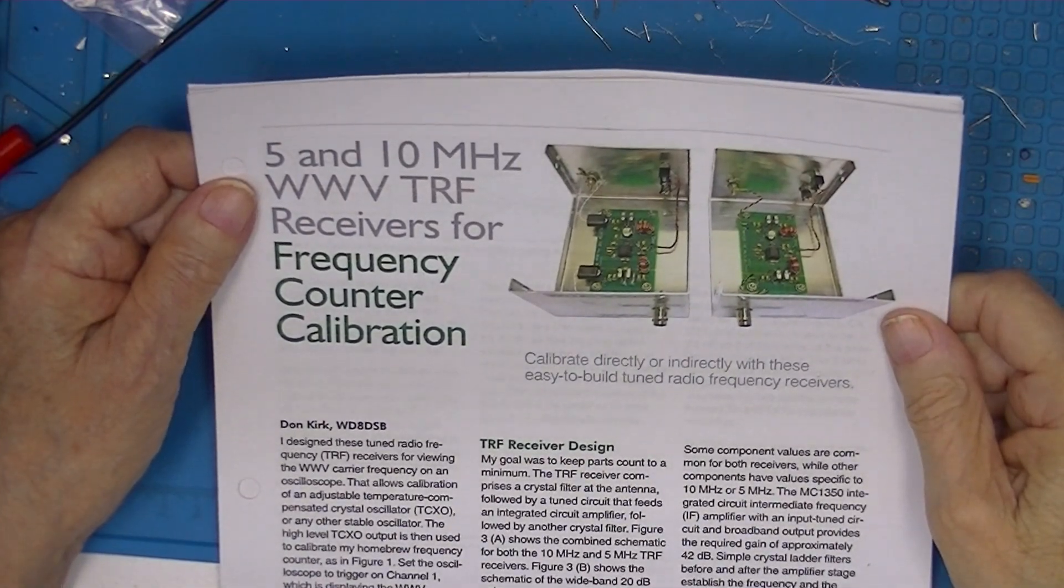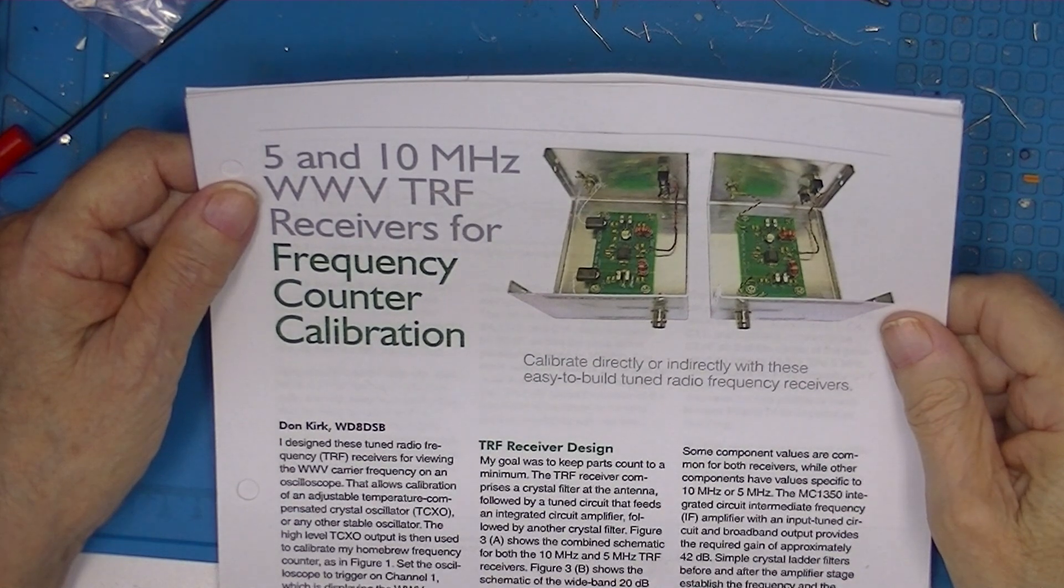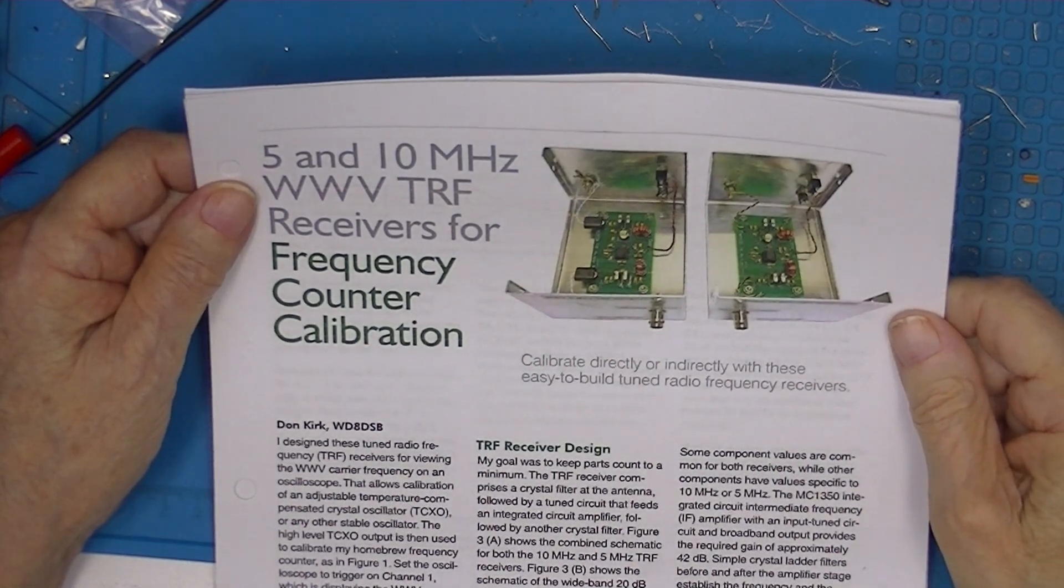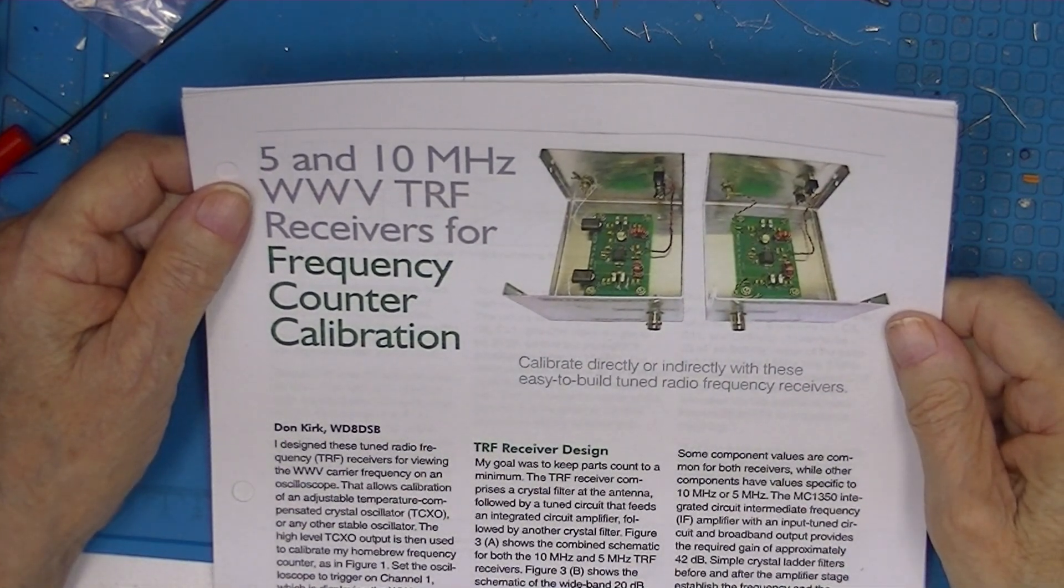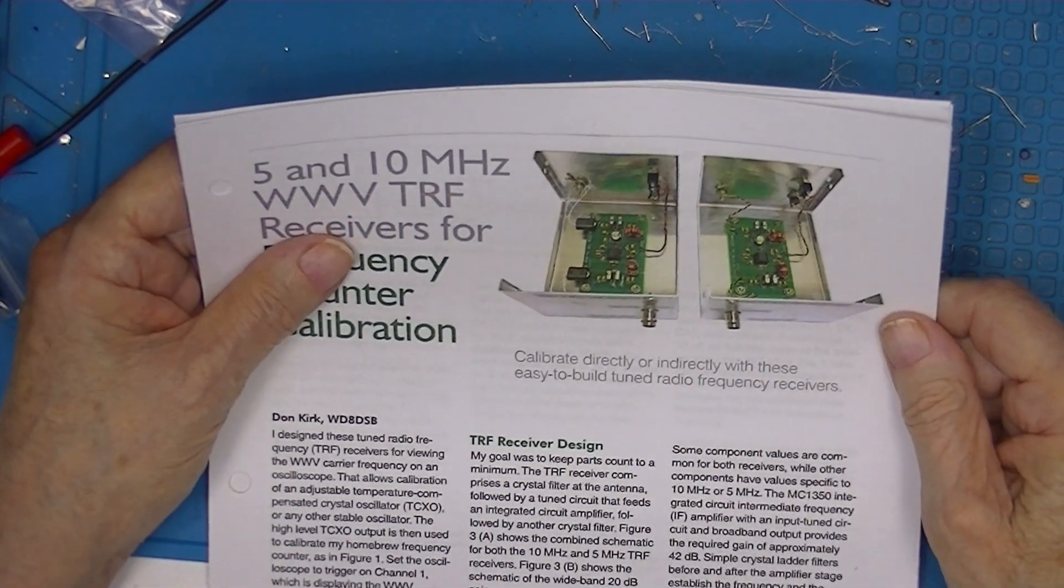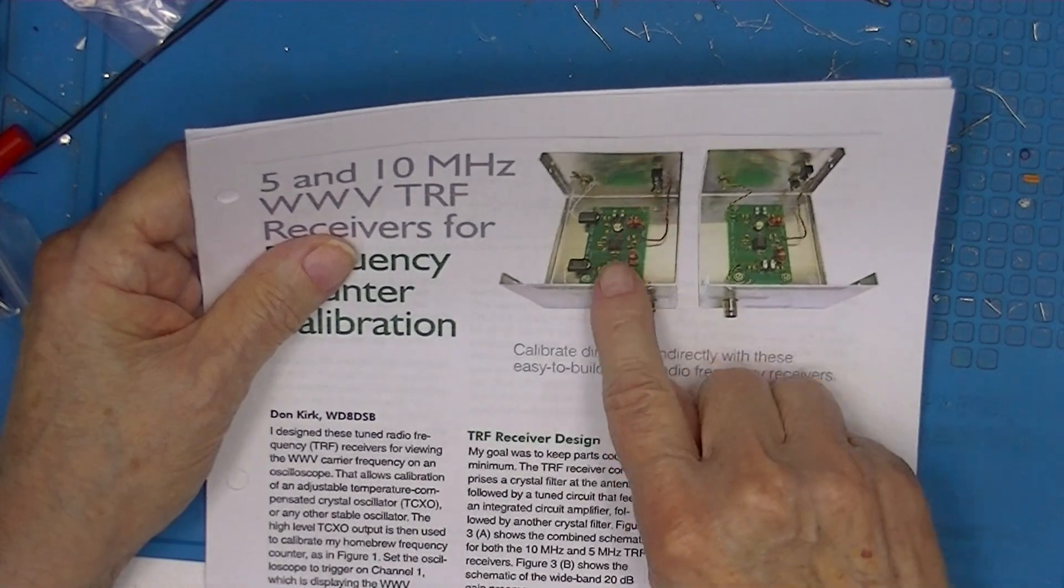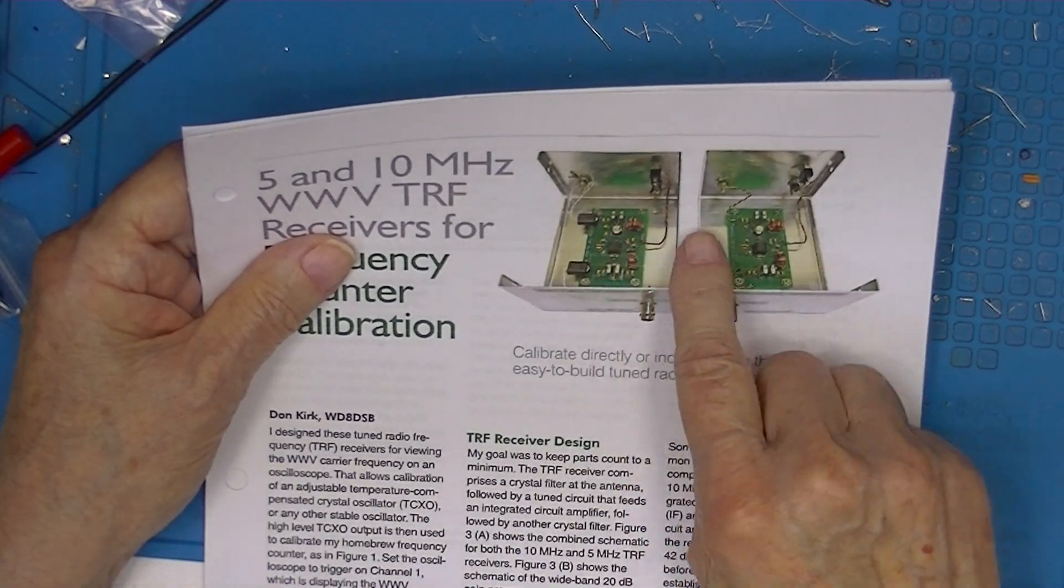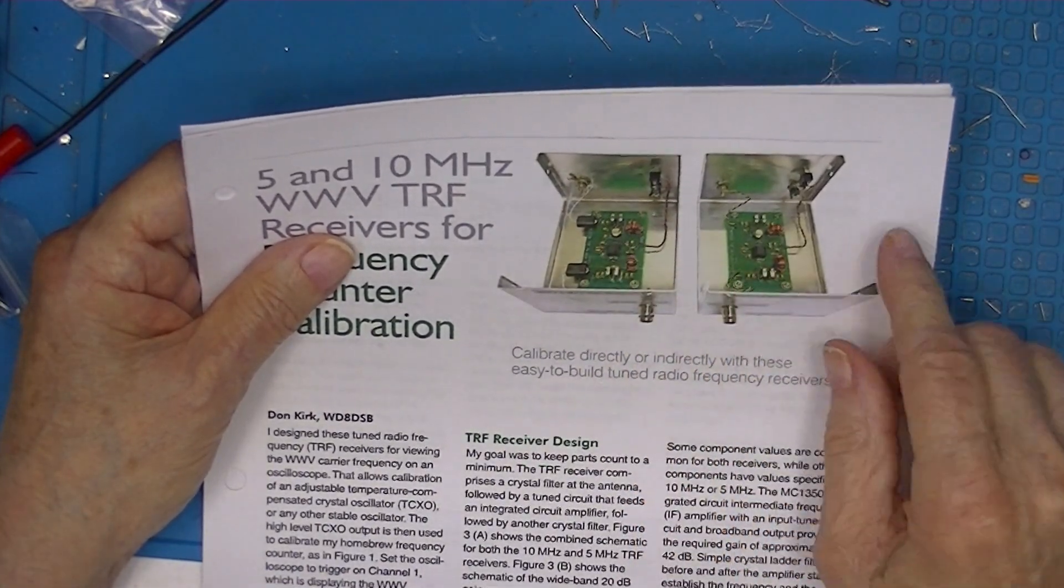After seeing the 10 MHz receiver actually work, I'm going to end this part and I've got a couple things to do. First I want to enclose the four different circuit boards in RF tight enclosures.